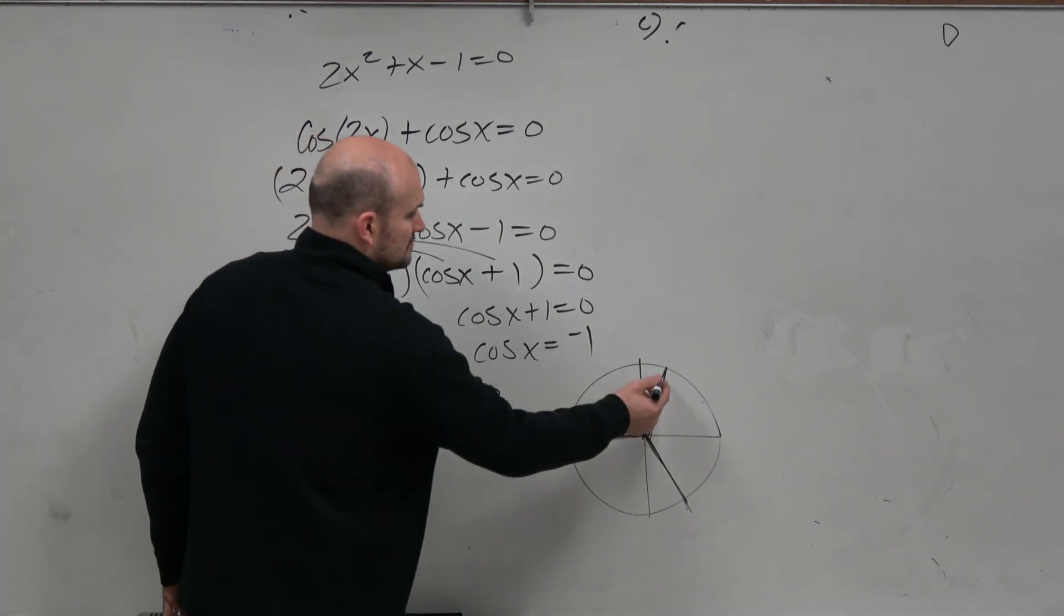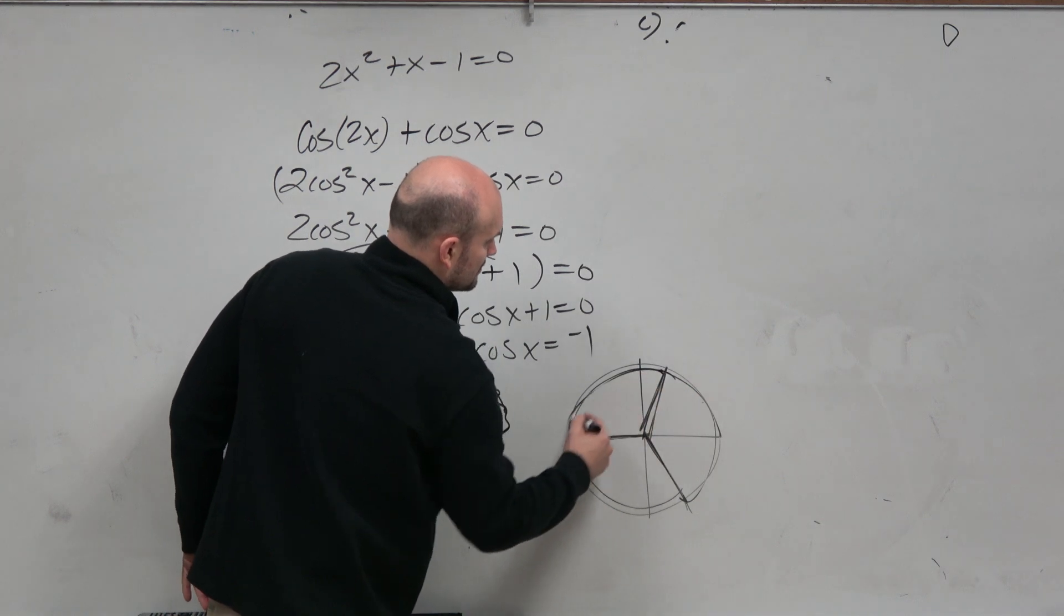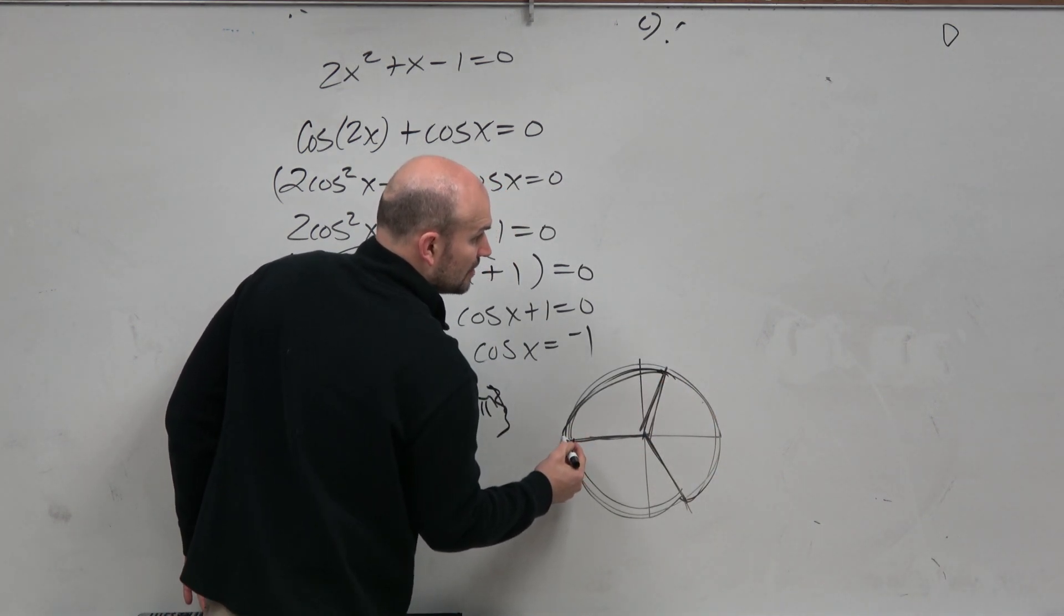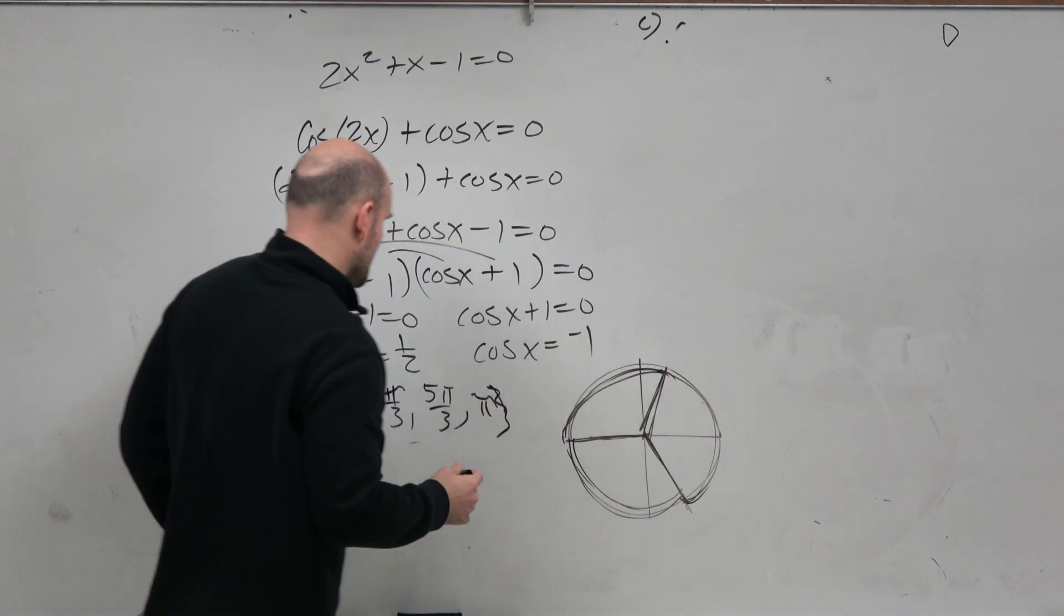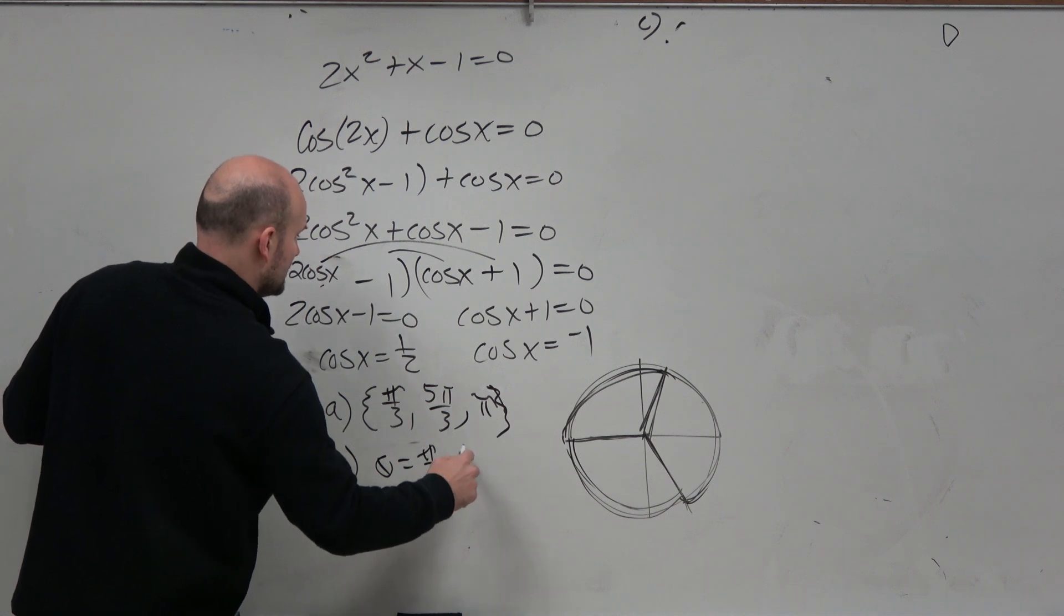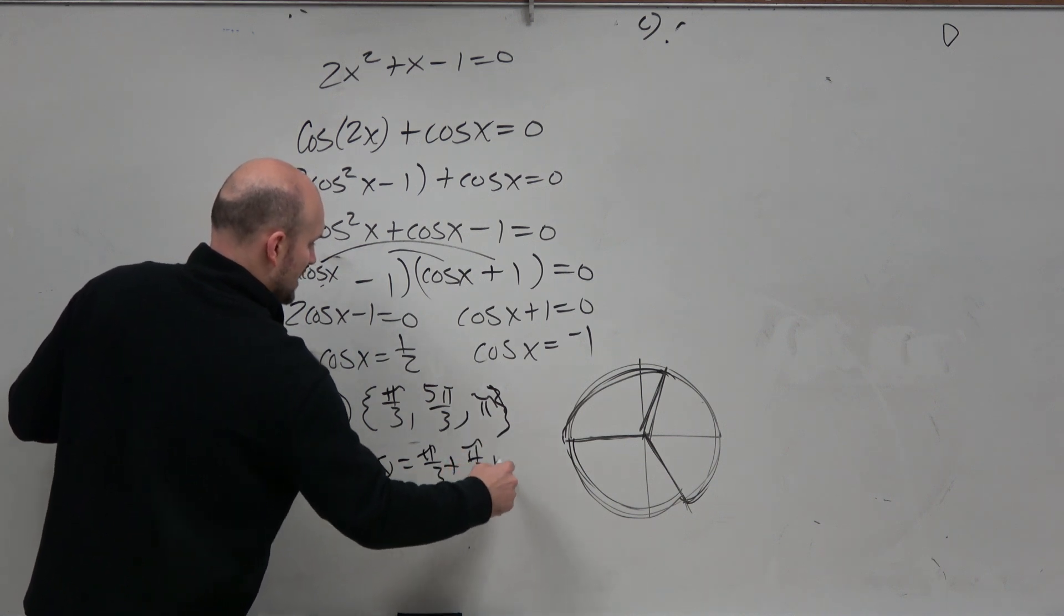How far apart are they? From here to here is π/3, 2π/3, 3π/3. So if I wanted to write all solutions, I could say θ = π/3 + (π/3)n.